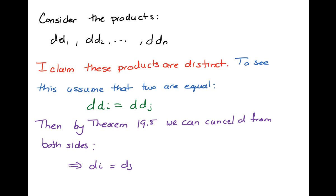That means I have n distinct products, and since there are n distinct elements in the integral domain, all of these products must be distinct elements in the integral domain.